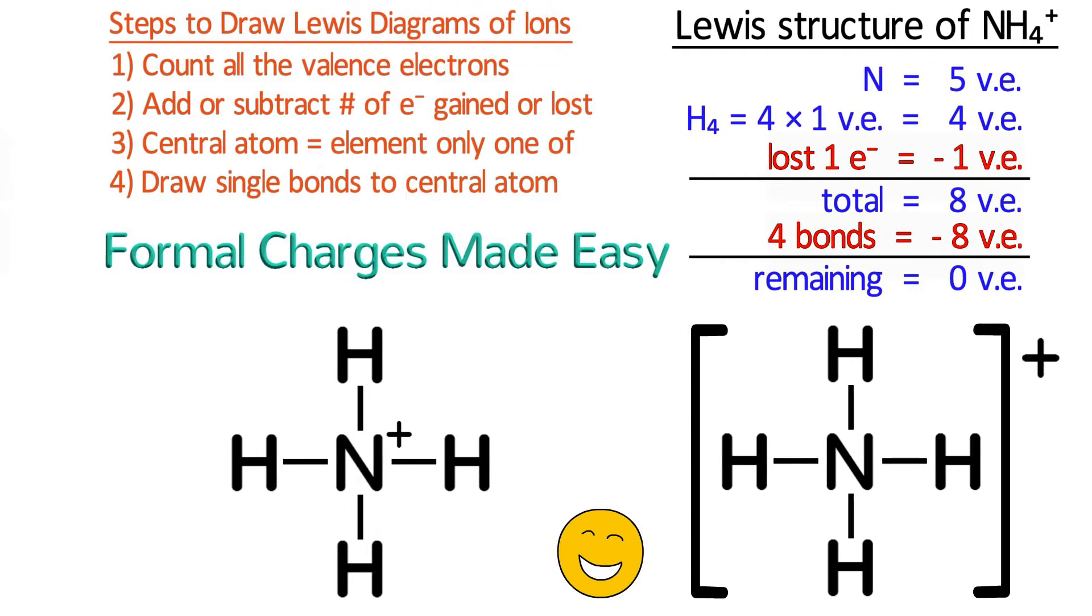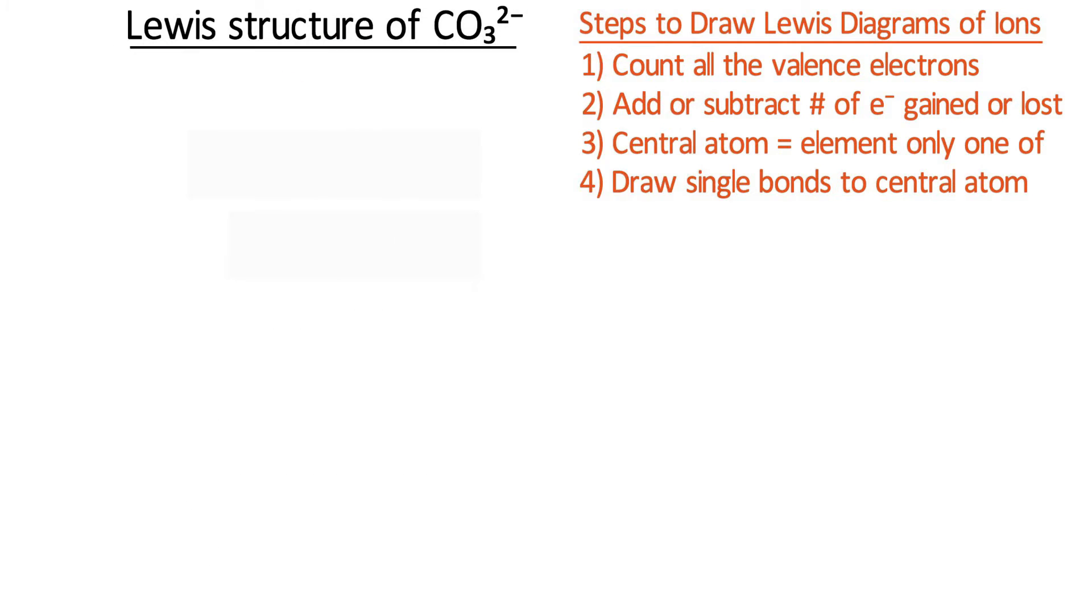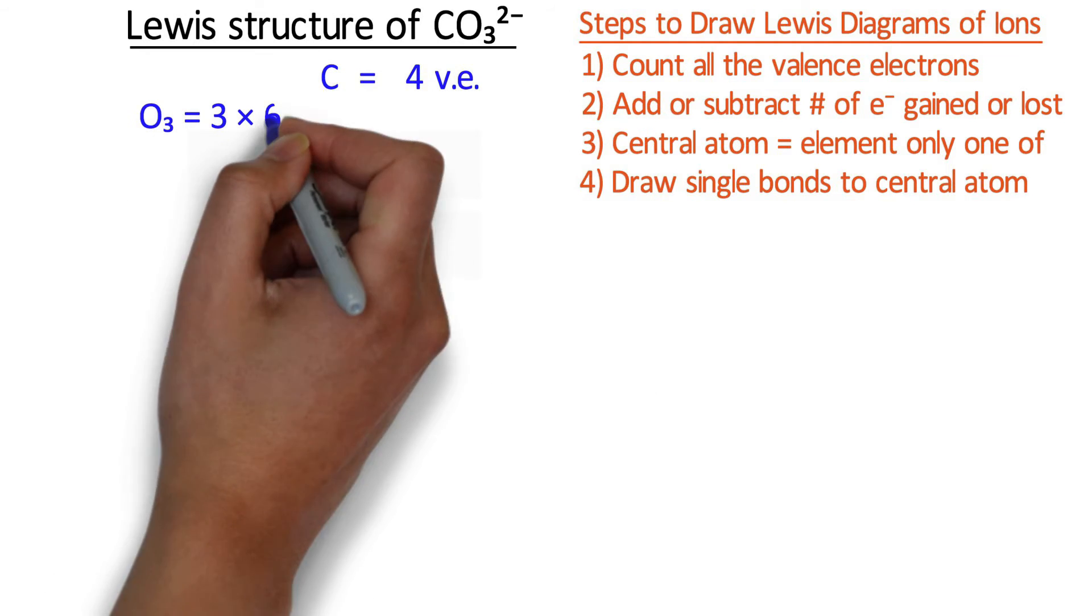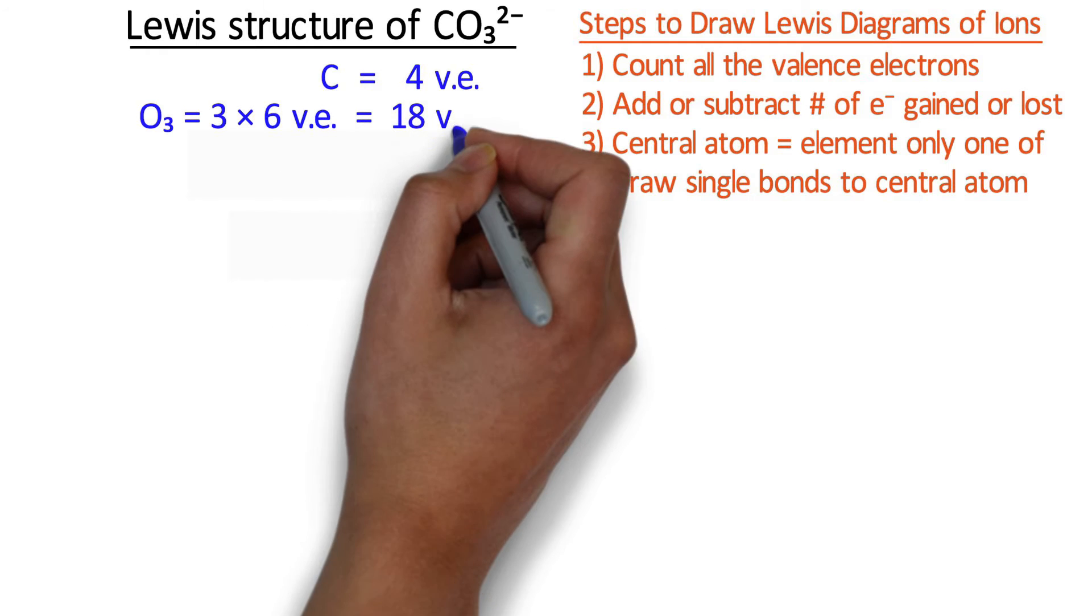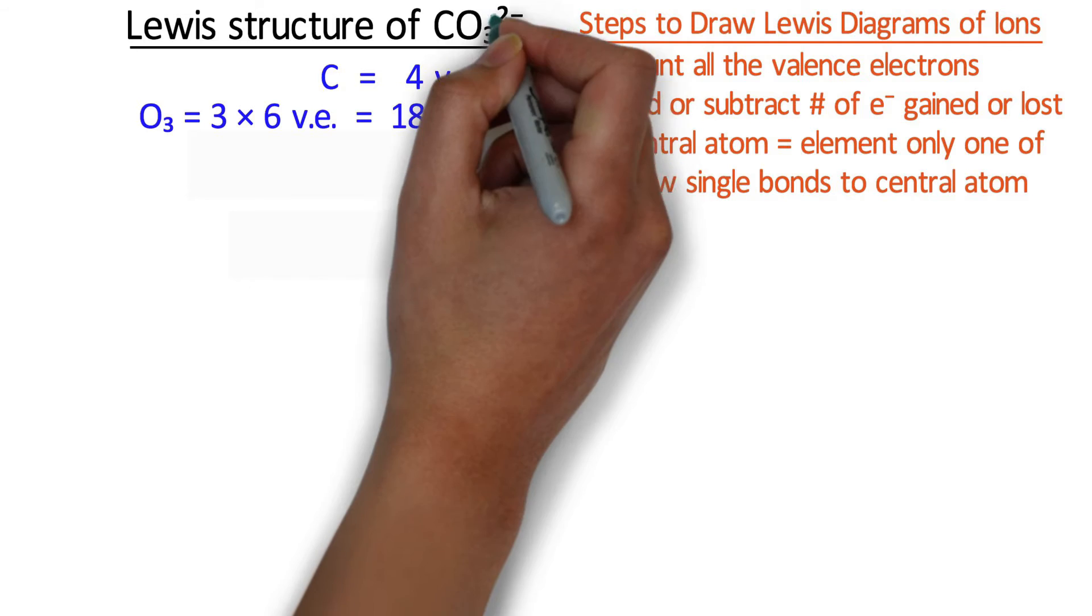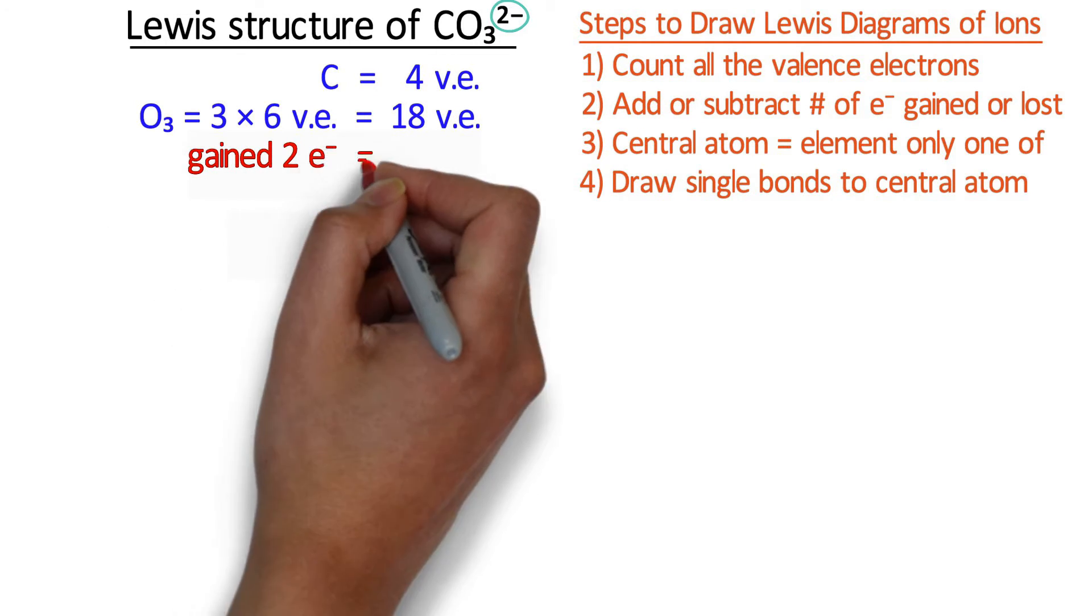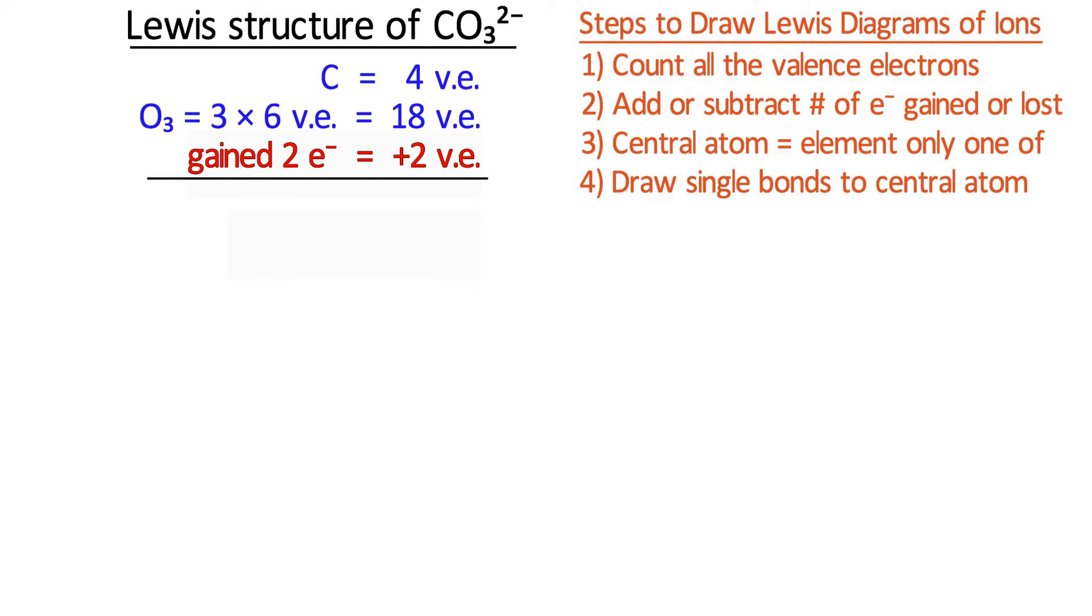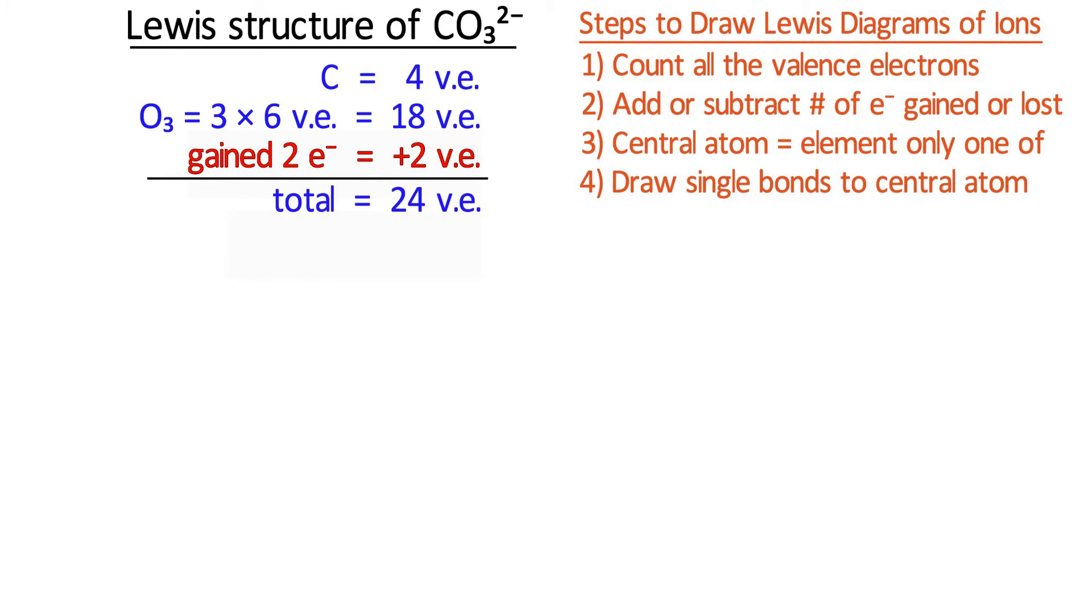Let's complete the Lewis structure of smelling salts by drawing carbonate, which is CO3 2-. First, add up all the valence electrons. Carbon has 4 valence electrons and each oxygen has 6. Because there are 3 oxygens, that gives us 18 valence electrons for the oxygens. The negative 2 charge of carbonate tells us that carbonate has gained 2 electrons, so we need to add 2 more valence electrons for the charge. Adding that all up gives us a total of 24 valence electrons for carbonate.